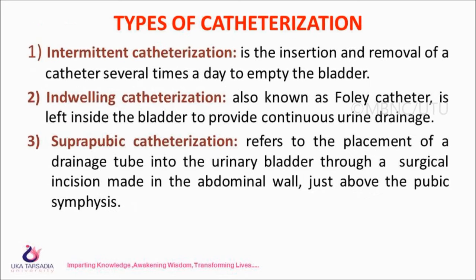Types of catheterization: The first type is intermittent catheterization — the insertion and removal of a catheter several times a day to empty the bladder. The second type is indwelling catheterization, also known as a Foley catheter, which is left inside the bladder to provide continuous urine drainage. The third type is suprapubic catheterization, which refers to placement of a drainage tube into the urinary bladder through a surgical incision made in the abdominal wall just above the pubic symphysis.